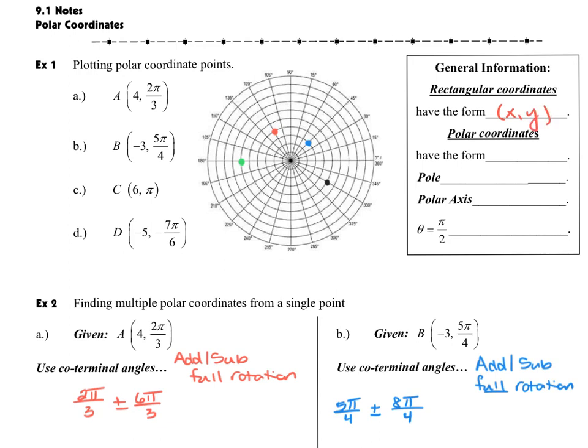A polar coordinate, however, is still going to have two points or two values inside the parentheses, but they're going to be expressed as an r comma theta, the r being a radius and the theta being an angle measure.